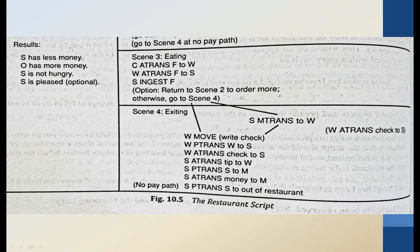Scene three is 'eating.' Cook A-trans food to waiter. Waiter A-trans food to customer. S ingest F — the customer ingests the food, meaning he takes the food item inside him.